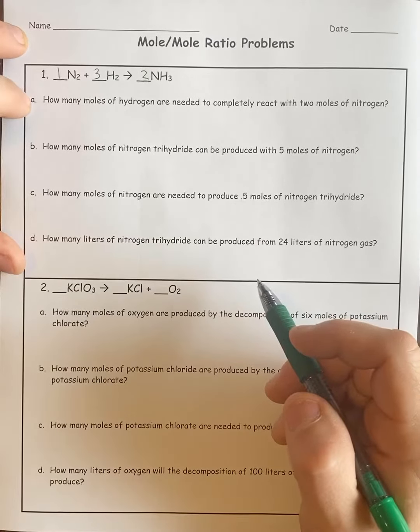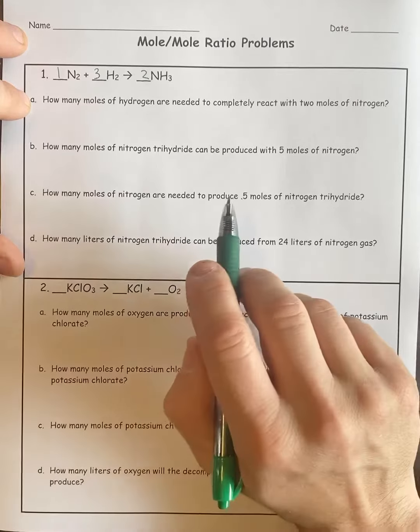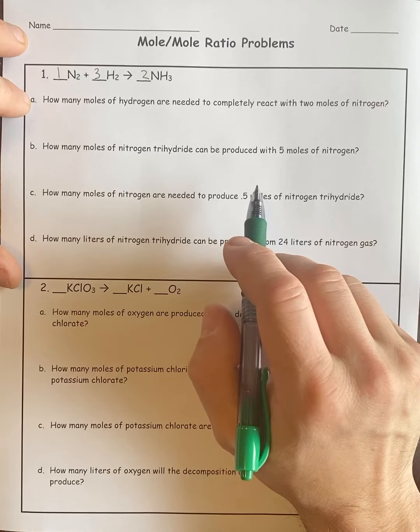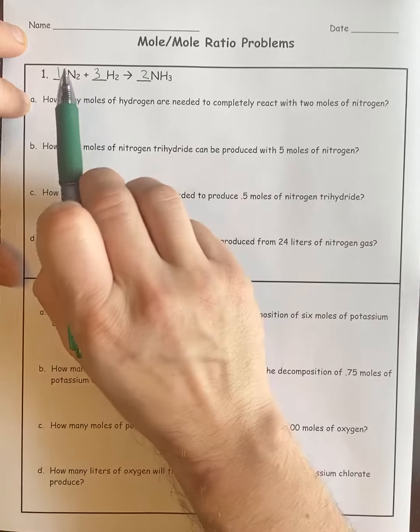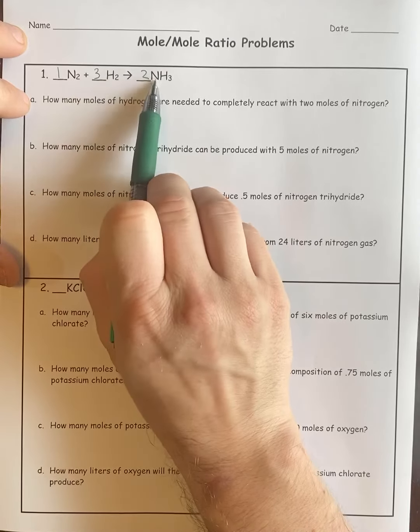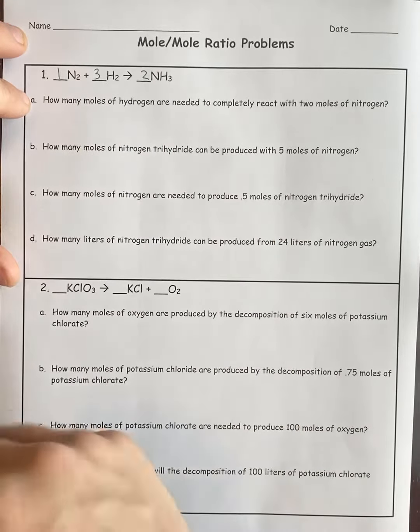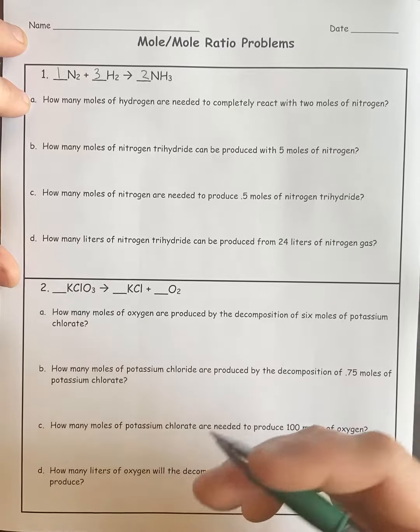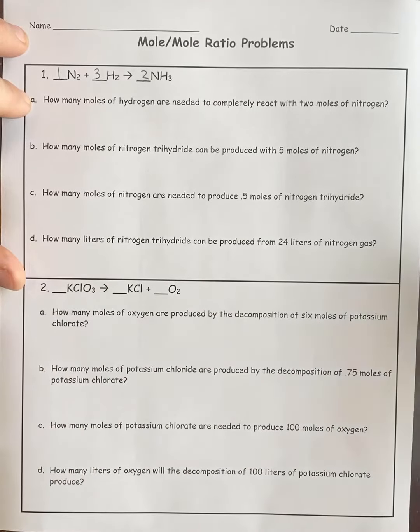Question A says, how many moles of hydrogen are needed to completely react with 2 moles of nitrogen? Well, nitrogen is this and hydrogen is this. This would be called nitrogen trihydride. Naming does play a factor in these types of problems, but it's not too bad.